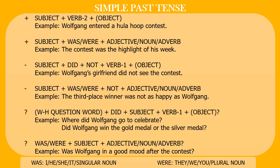For question nominal, the example is 'Was Wolfgang in a good mood after the contest?' — pattern is 'was/were' plus subject plus adjective/noun/adverb. Note that 'was' is used for subjects I, he, she, it, and singular nouns, while 'were' is used for they, we, you, and plural nouns.